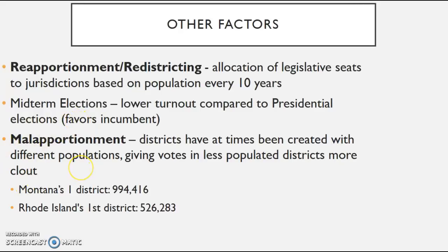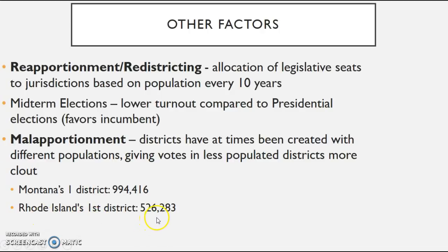Midterm elections have lower turnout compared to presidential elections, which tends to favor the incumbent. Importantly, districts within a state cannot be malapportioned — they have to have roughly the same number of people. Without that standard, some votes would count more percentage-wise than others. Montana's one congressperson represents roughly a million people, while Rhode Island's districts average about half a million — that's not inherently fair but there's nothing you can do about it since it's based on the census.